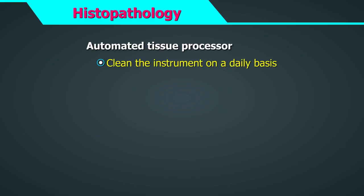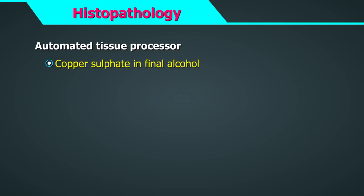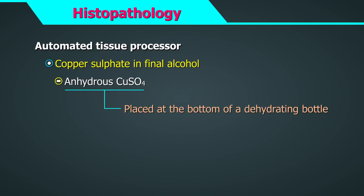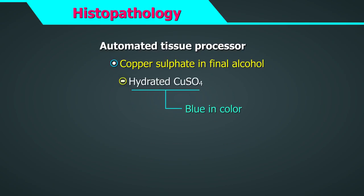Clean the instrument on a daily basis and mop any reagent spill immediately. Once a month, lift the carousel cover to its upper end position, clean the carousel axle with a cleaning cloth, and apply a thin coat of equipment oil. Preventive maintenance should be done once a year by an authorized service manager. A layer of anhydrous copper sulphate is placed at the bottom of a dehydrating bottle and covered with filter papers. Anhydrous copper sulphate removes water from alcohol — it is white in colour while the hydrated form is blue, so it acts as an indicator for the presence of water.